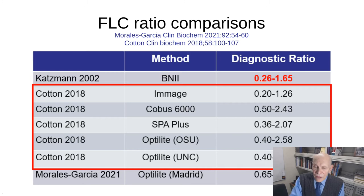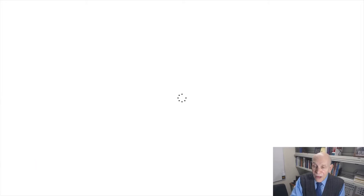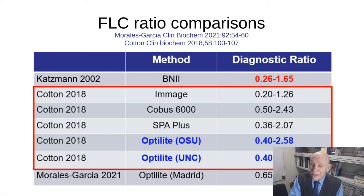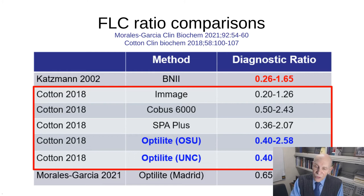The Optilite results are particularly important: the exact same test on the exact same instrument at Ohio State University and University of North Carolina performed virtually identically, with only a slight difference. This demonstrates that it is the instrument that makes the difference, not the location or the assay itself. This matters because the Optilite is currently the most widely used instrument for this test in the United States.